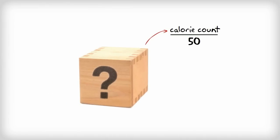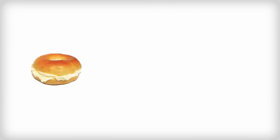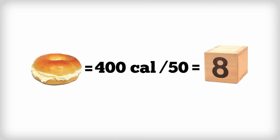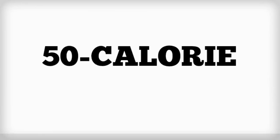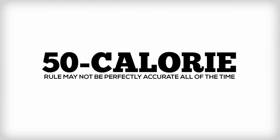For example, an Einstein bagel with a smear of cream cheese has 400 calories. 400 calories divided by 50 equals 8 blocks. Simple.